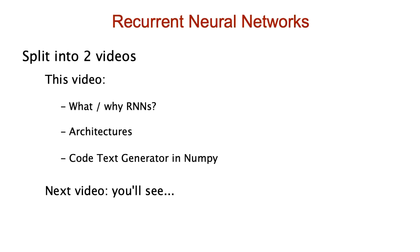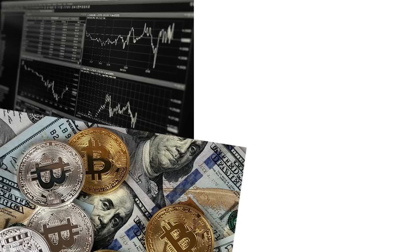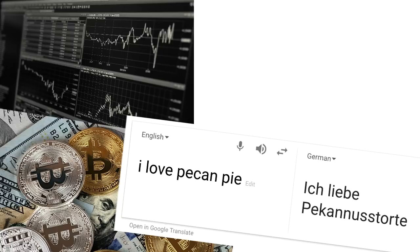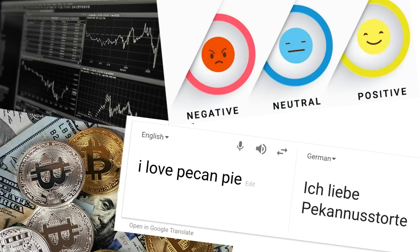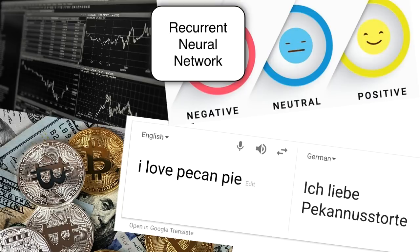When you hear recurrent neural networks, you think of time series. You think of the stock market prediction and cryptocurrency. You may be interested in recurrent nets for their applications in natural language processing, like language translation and sentiment analysis. How are RNNs so versatile? How can one type of network be used in so many applications?